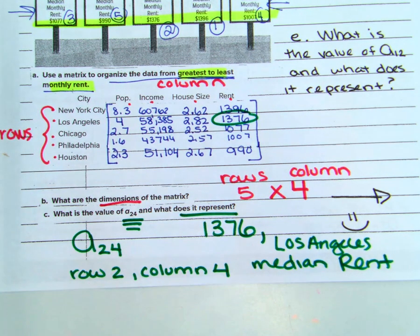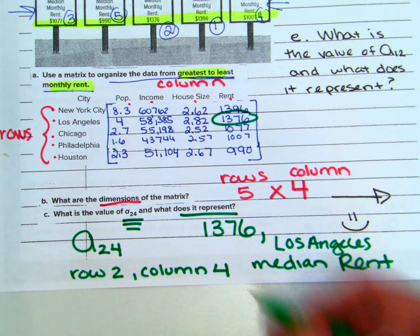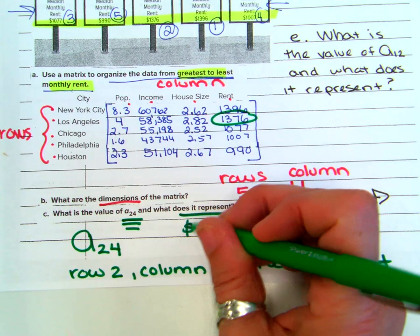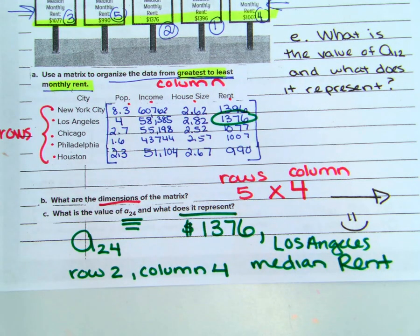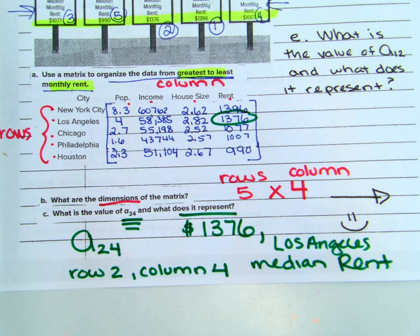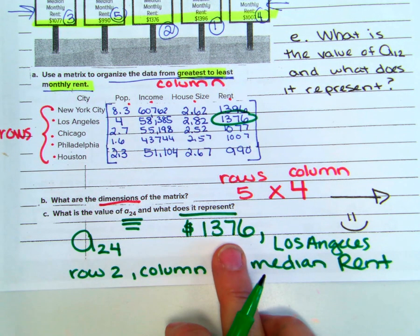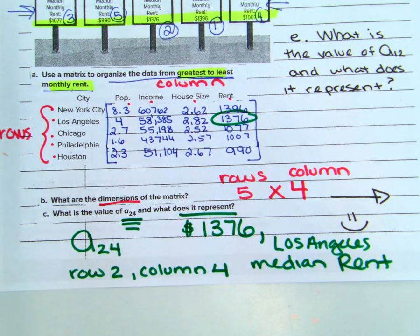We should use the word 'median' — it's the Los Angeles median rent. Median means the middle number: if you took all the rents in LA and lined them up, the very middle value is $1,376. People will be paying more and less, but the person in the middle is paying $1,376.